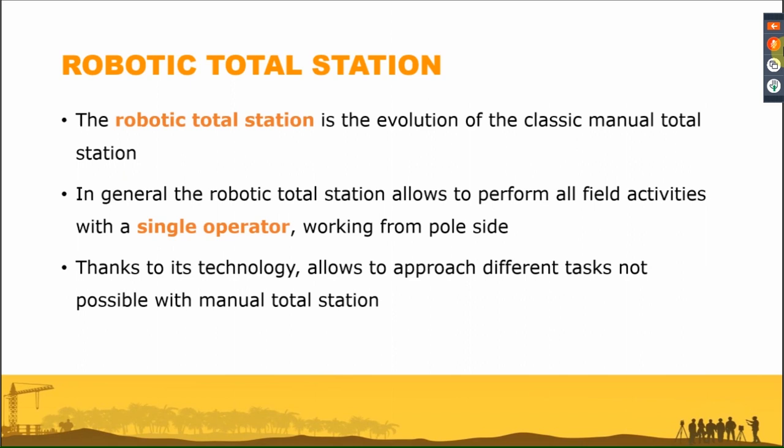Not only that — the robotic total station also allows us to approach different applications that normally we cannot do with a manual total station. We should not consider the robotic total station just as an evolution of the manual total station in terms of single-operator use, but really as an instrument that allows different tasks. On a job point of view, a robotic total station really provides much more benefit than only working with one operator instead of two.